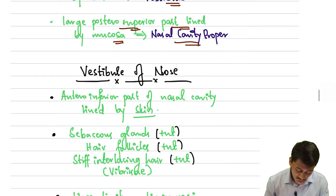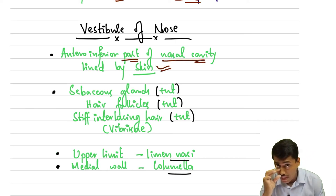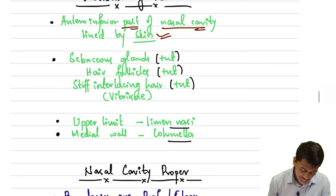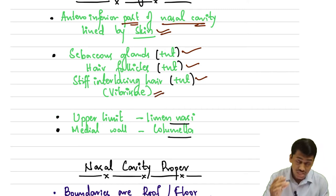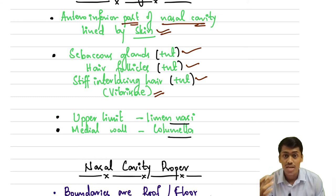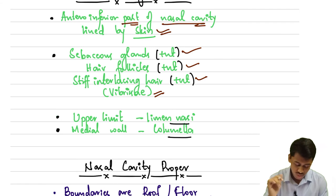The vestibule of the nose is the anterior inferior part of the nasal cavity, lined by skin. It contains sebaceous glands, some hair follicles, and stiff interlacing hairs called vibrissae. These hairs help in blocking external dust particles of larger size when we inspire.